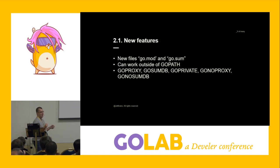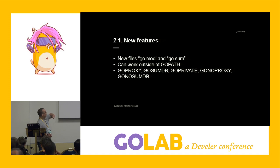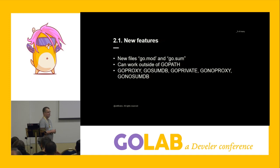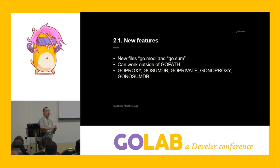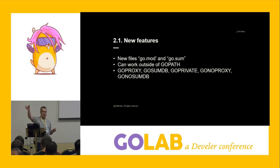Go modules also introduced a few environment variables. First there was GoProxy, and then in 1.13 came GoSumDB, GoPrivate, GoNoProxy, and GoNoSumDB. GoProxy is a way to tell the Go command to use this proxy value and fetch dependencies from that address. GoSumDB provides a way for your go.sum files to verify against a server address: for this package, at this version, do I have the correct hash?